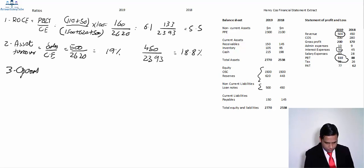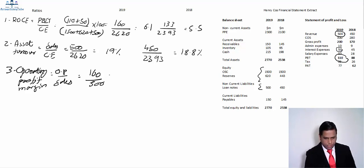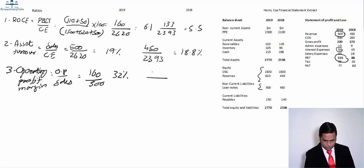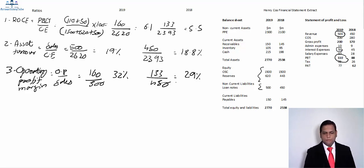Operating profit margin equals operating profit over sales. We have already computed our operating profit of 160 and the sales were 500. Computing that and multiplying by 100 gives 32% for 2019. For 2018, operating profit over sales of 450 gives 29%. So the operating profit margin has improved by around 3%, showing the company is moving in the right direction towards achieving its corporate objectives.